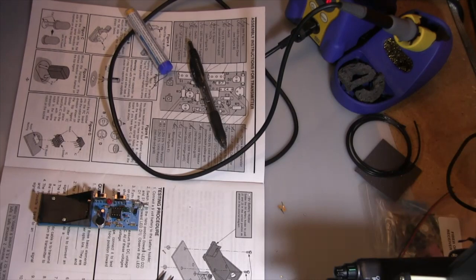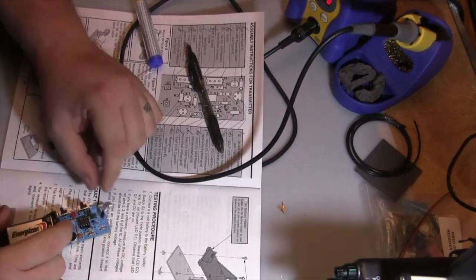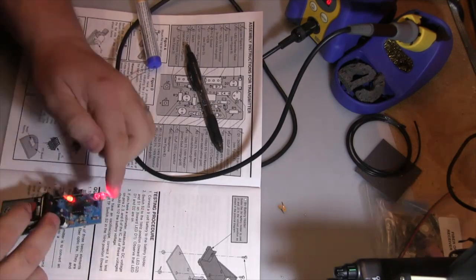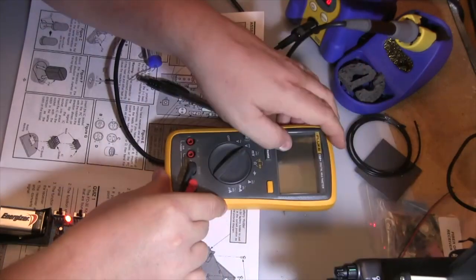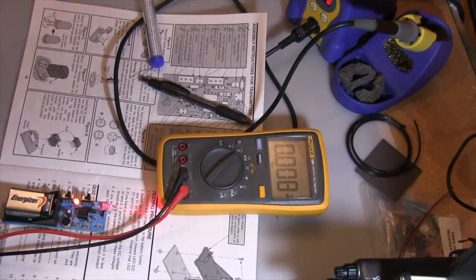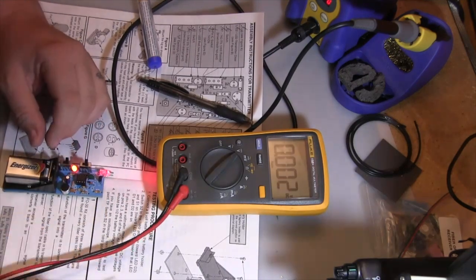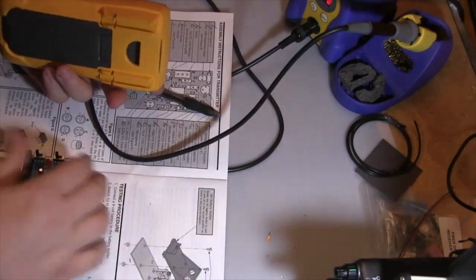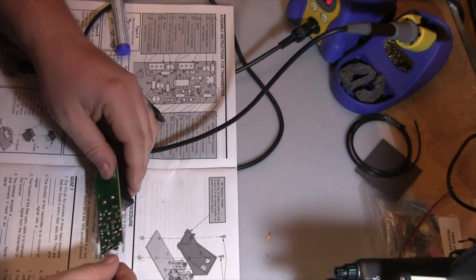Now it's time to test it. So on the testing instructions it says turn it on and see if you got light, and I do got light. Now if you don't have a multimeter, you need to stop right now, go get a multimeter. It asked me to test on certain pins for the voltage of about half of the battery's voltage, and it did check out.